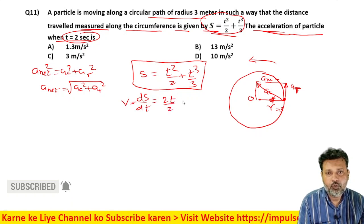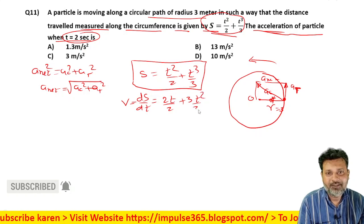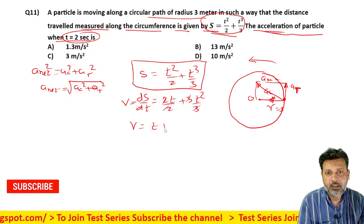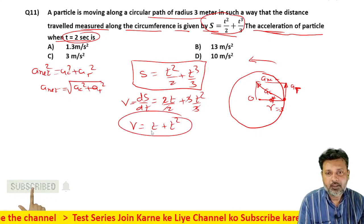How much will come? 2t upon 2 plus 3t square by 3. 3 and 3 cancel, 2 and 2 cancel. The value of velocity is t plus t square.